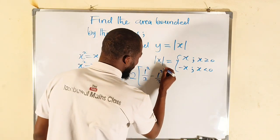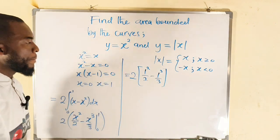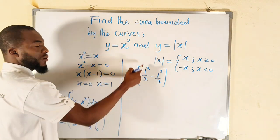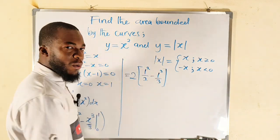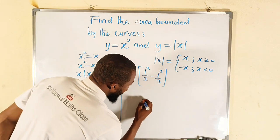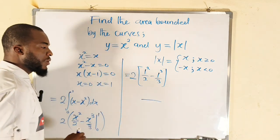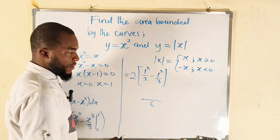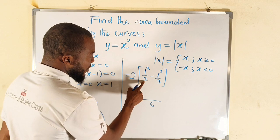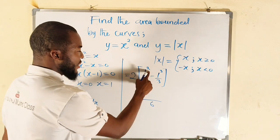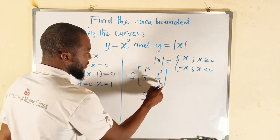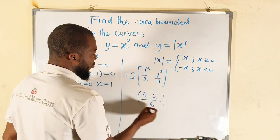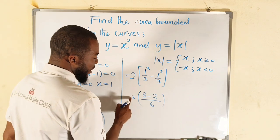This is 1/2 - 1/3. What is the LCM between them? The LCM would be six, right, because two times three is six. Two into six is three, three times one is three, minus three into six is two, two times one is two. The whole of this multiplied by two, and two can go into six exactly three times.